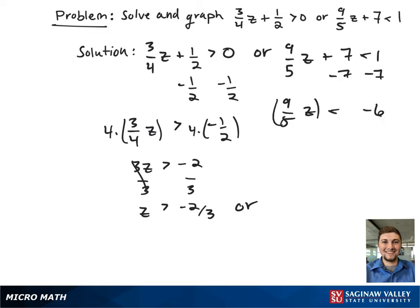To get rid of the fraction, we're going to multiply both sides by 5. This gives 9z is less than negative 30.